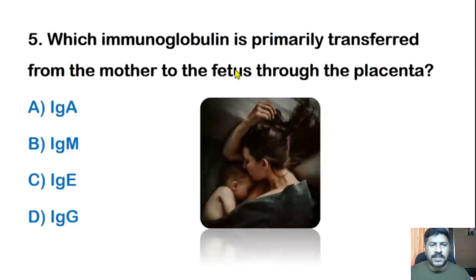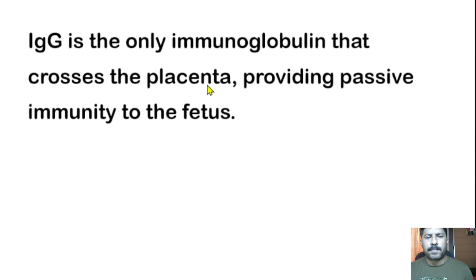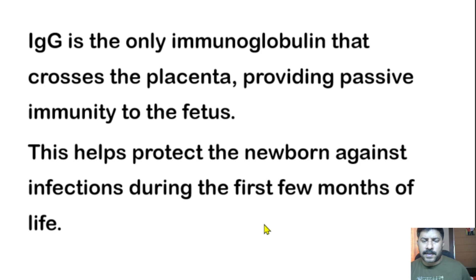Fifth question: Which immunoglobulin is primarily transferred from the mother to the fetus through the placenta? Options: IgA, IgM, IgE, or IgG. The correct answer is IgG. IgG is the only immunoglobulin that crosses the placenta, providing passive immunity to the fetus and helping protect the newborn against infection during the first few months of life. Additionally, IgA is transferred from mother to baby through breast milk via breastfeeding.